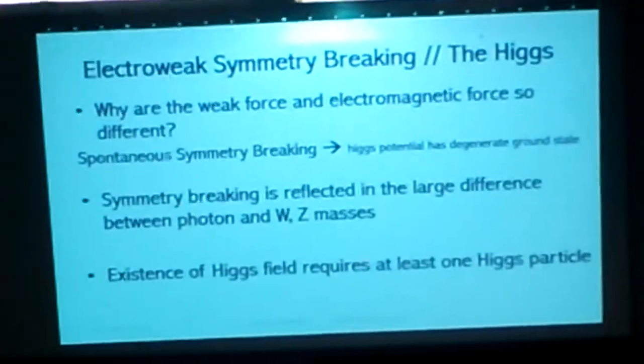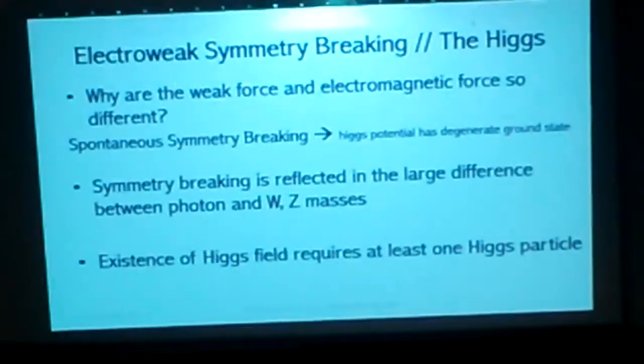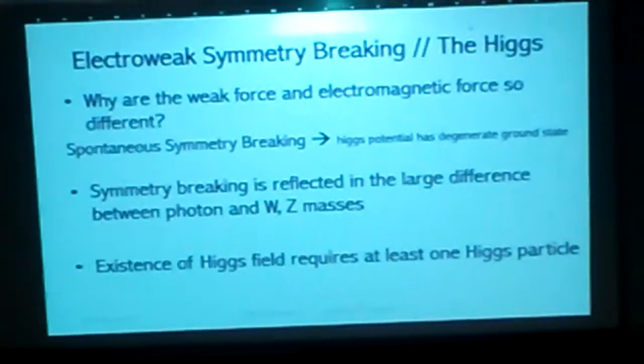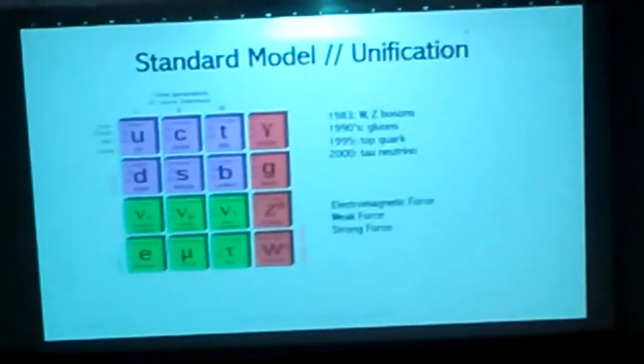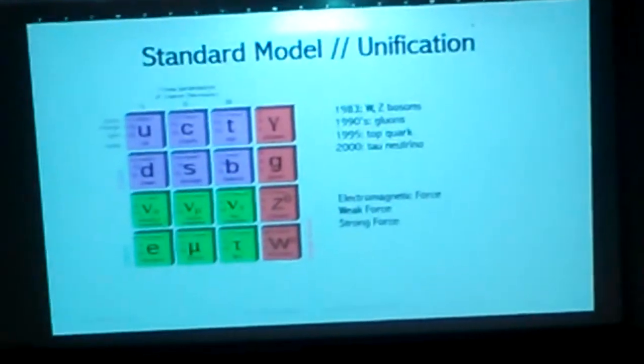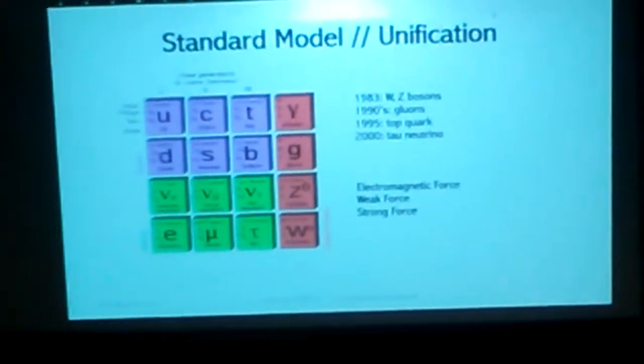Why is it that the electroweak force and electromagnetic force are so different? If you look back at the Standard Model, you see that the photon, which mediates the electromagnetic force, doesn't have any mass, while the W and Z bosons, which mediate the weak force, have a lot of mass.